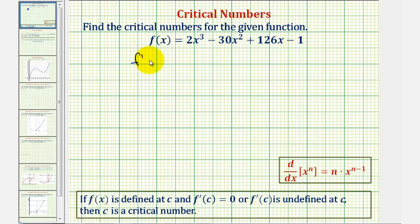So f'(x) will be equal to the derivative of 2x³, that would be 6x², minus the derivative of 30x², that would be 60x, plus the derivative of 126x, which would be 126, minus the derivative of one, which would be zero.